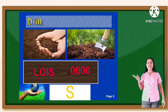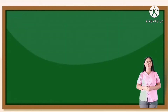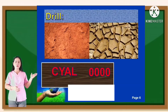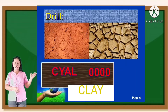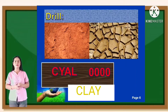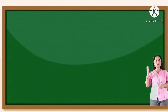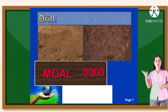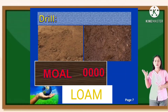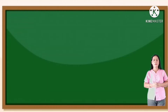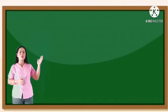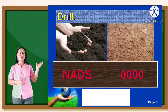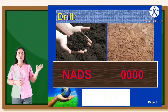The word is soil. In number two, the word is clay. How about number three? The word is bloom. In picture number four, the word is sand.